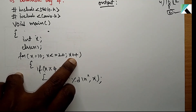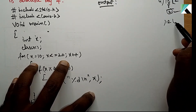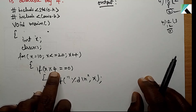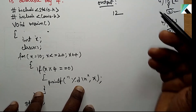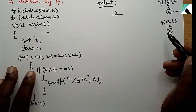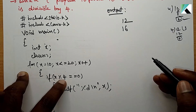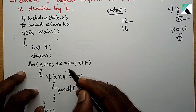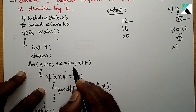Now x equals 11, condition false. Then x equals 12: 12 modulus 4 equals 0, so 0 equals 0, condition true, and 12 is printed. Then 13 — remainder 1, 14 — remainder 2, 15 — remainder 3. Next 16 — 16 divided by 4, remainder 0, so 16 is printed. Then 17 — remainder 1, 18 — remainder 2, 19 — remainder 3. Last, 20 — that is also printed. When x becomes 21, 21 is not less than or equal to 20, so condition is false and the loop ends.